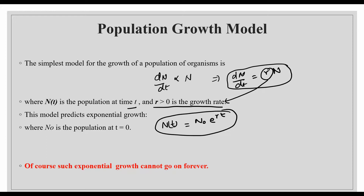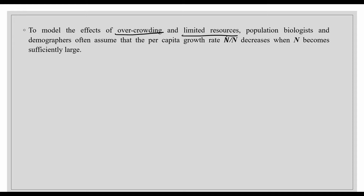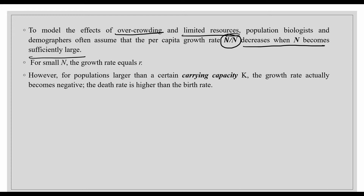The next model is the logistic model. Biologists argued that with limited resources, the per capita growth rate decreases when the population N becomes sufficiently large. For small N, the growth rate is the same as the exponential rate, but for higher populations the population reaches its carrying capacity — the maximum number of individuals an environment can sustain. If the population exceeds that, the growth rate becomes negative due to competition and limited resources.